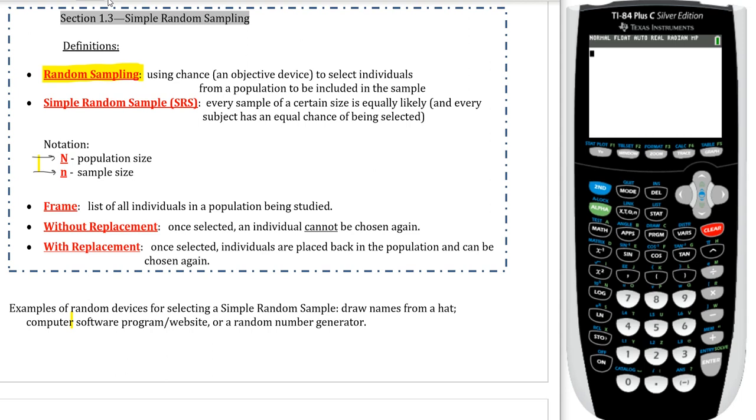A couple other terms. First one, you don't see too often the word frame. The frame is just a list of all individuals in the population being studied. So if you actually list out the entire population, we call that the frame that you're gathering from. What we do talk about more often is what we call without replacement and with replacement. Without replacement means that once you select an individual, the individual cannot be chosen again.